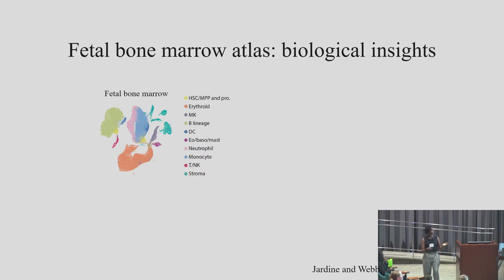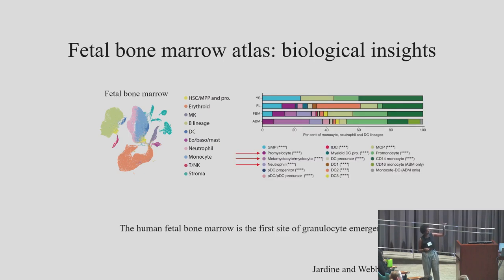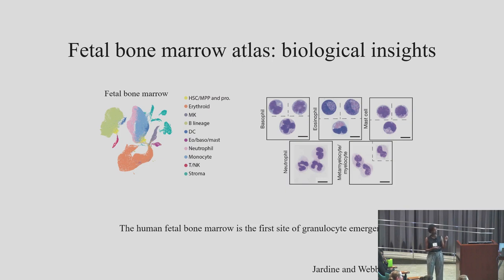The bone marrow — I got really into bones during my PhD. We see stem cells in yellow, erythroid cells in orange, B lineage cells in green — the bone marrow being very important for B cell production makes sense. But what was strange was the myeloid cell compartment in pink and blue. There were unexpected findings around myeloid cell diversification: from yolk sac to fetal liver to fetal bone marrow, the myeloid compartment becomes much more diversified. Uniquely in the fetal bone marrow, granulocytes emerge for the first time. Why are these innate immune cells present as early as the second trimester? We validated their presence using cytospins, including the neutrophil lineage and non-neutrophilic granulocytes.